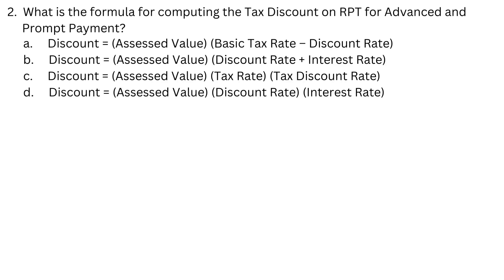Number 2. What is the formula for computing the tax discount on RPT for advanced and prompt payment? A. Discount equals assessed value multiplied by basic tax rate minus discount rate. B. Discount equals assessed value multiplied by discount rate plus interest rate. C. Discount equals assessed value multiplied by tax rate multiplied by tax discount rate.